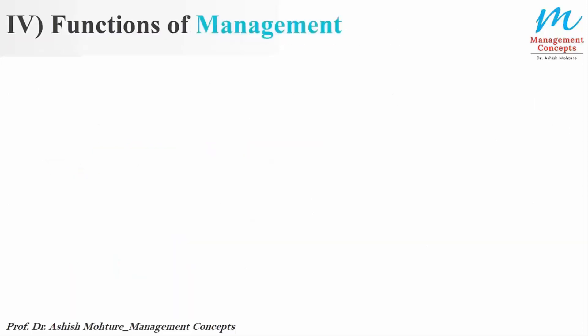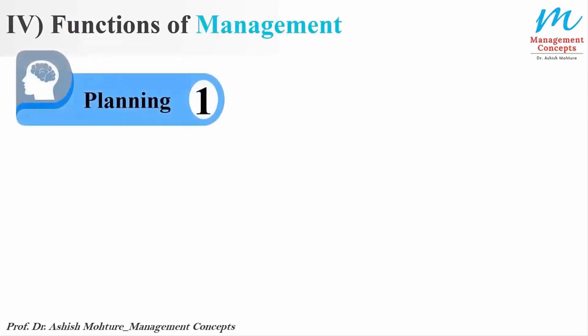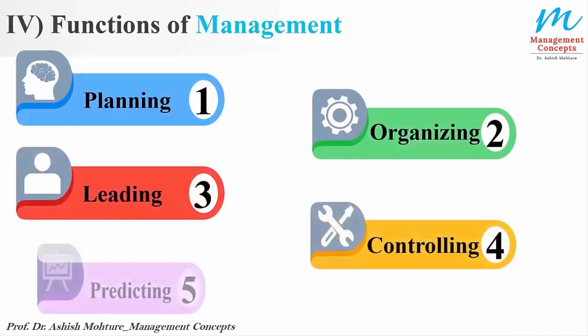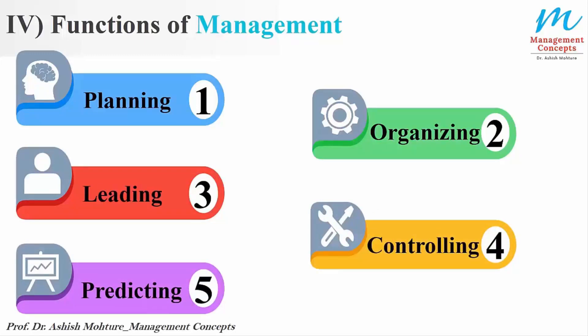The fourth part is the functions of management. Fayol identified five functions: planning, organizing, leading, controlling, and predicting. He categorized all management functions into these five areas, all of which are very important and still used today in running organizations. These functions are discussed in detail in a separate video, the link for which is available in the description box.